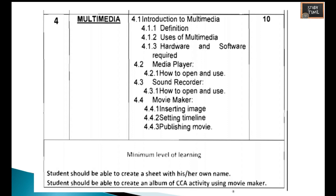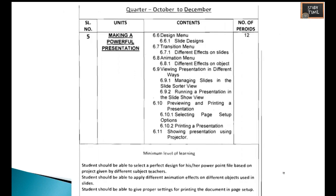The fourth chapter is multimedia — covering the definition, uses, and hardware and software required. Under media player you need to know how to open and use it; under sound recorder you need to know how to open and use it. You will also learn Movie Maker, including inserting images, setting the timeline, and publishing a movie. The minimum level of learning is that students should be able to create a sheet with their own name and create an album of CCA activity using Movie Maker.